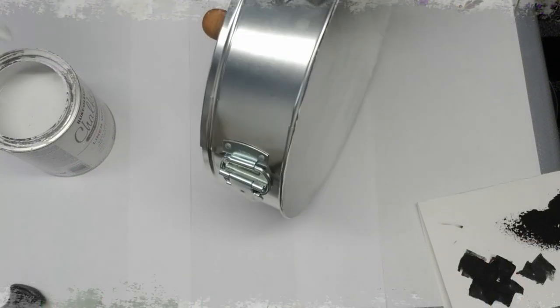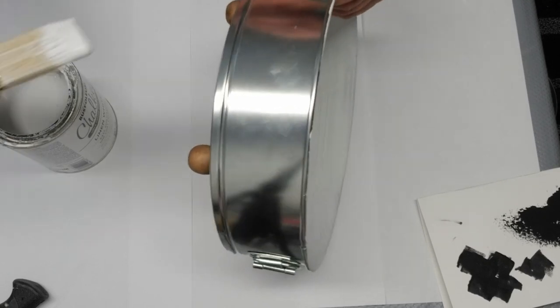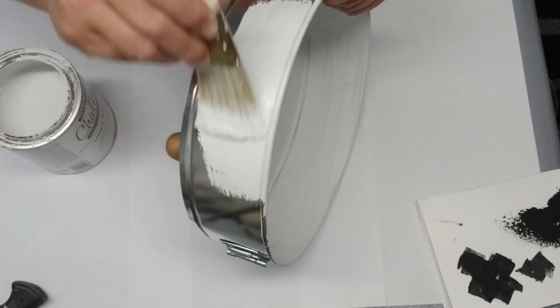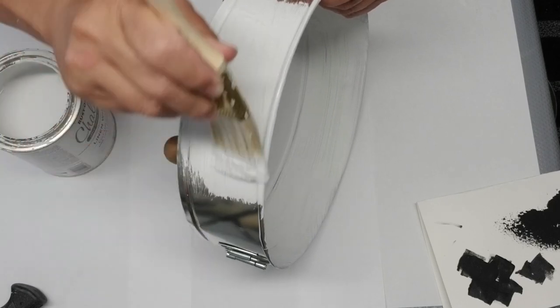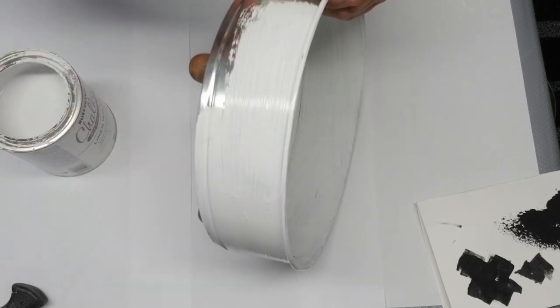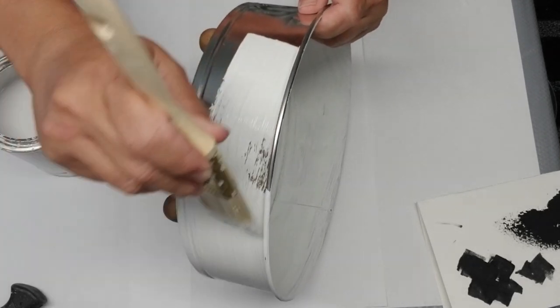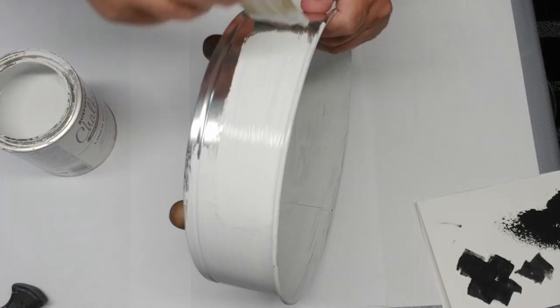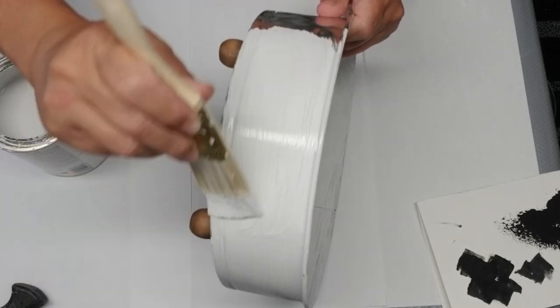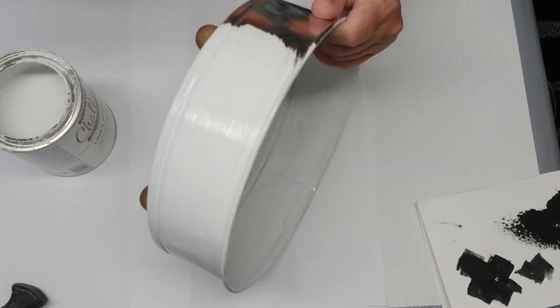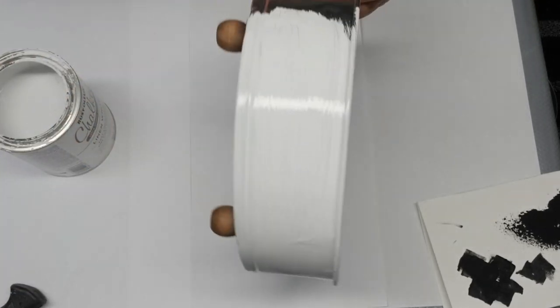Today I'm using some springform pans to create an enamel look tiered tray. You'll probably recognize some of these pans—they're used to make cheesecake because the bottom pops right out of them. There's a latch that allows the bottom to just open up and then you've got your cheesecake all set to go.